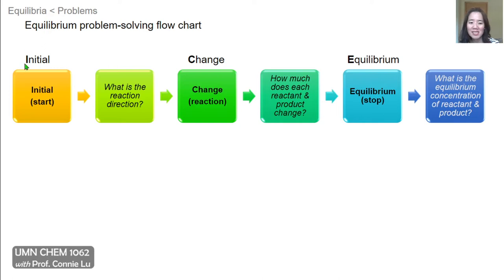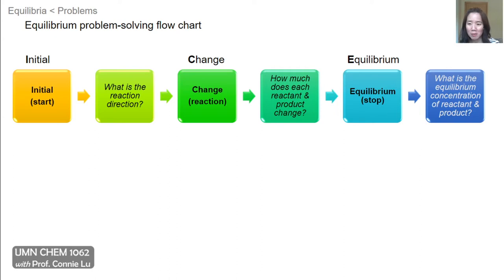From this initial point, we want to determine which direction will the reaction proceed — will it be towards products or will it be towards reactants? That determines the direction of the change, but not the amount of the change. The change is how much each reactant and product changes as the reaction progresses to equilibrium, so that ultimately we'll have those final concentrations.